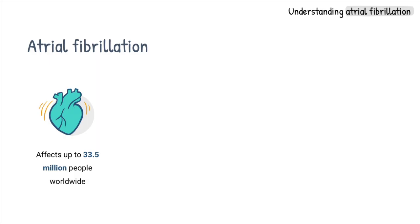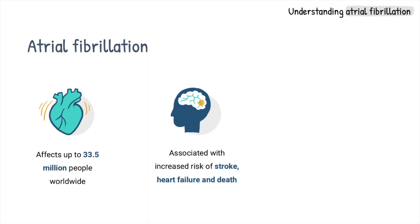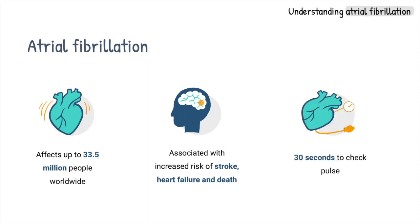So what is atrial fibrillation? Irregular heart rhythm, known medically as atrial fibrillation, or AF or AFib, is the commonest heart rhythm disease in the world, affecting up to 33.5 million people worldwide and continuing to increase annually. It is associated with increased risk of stroke, death, and heart failure. The detection of AF involves only a 30-second pulse check which anyone can do.